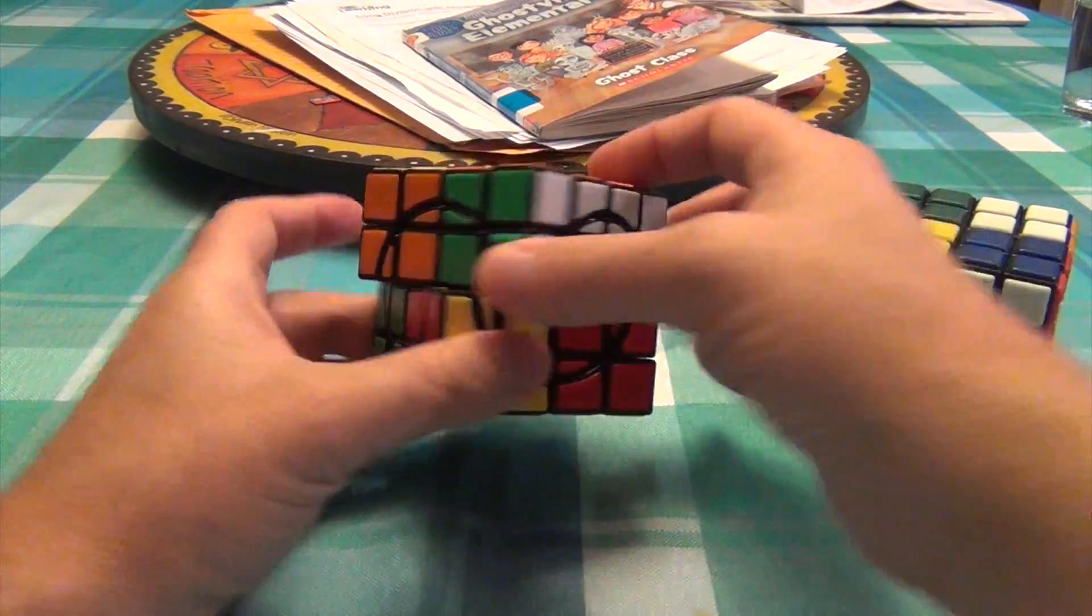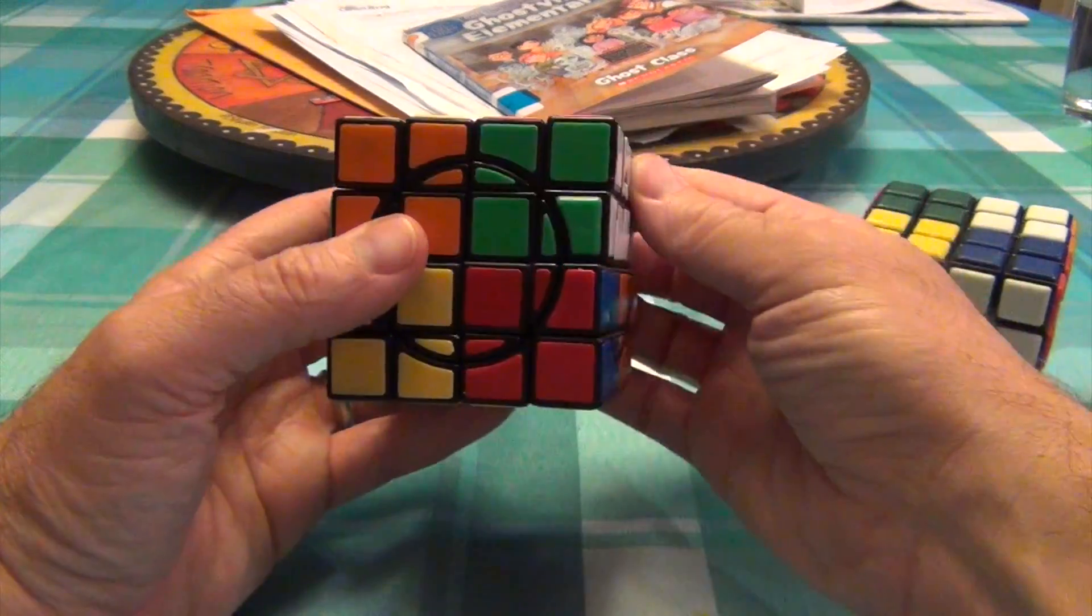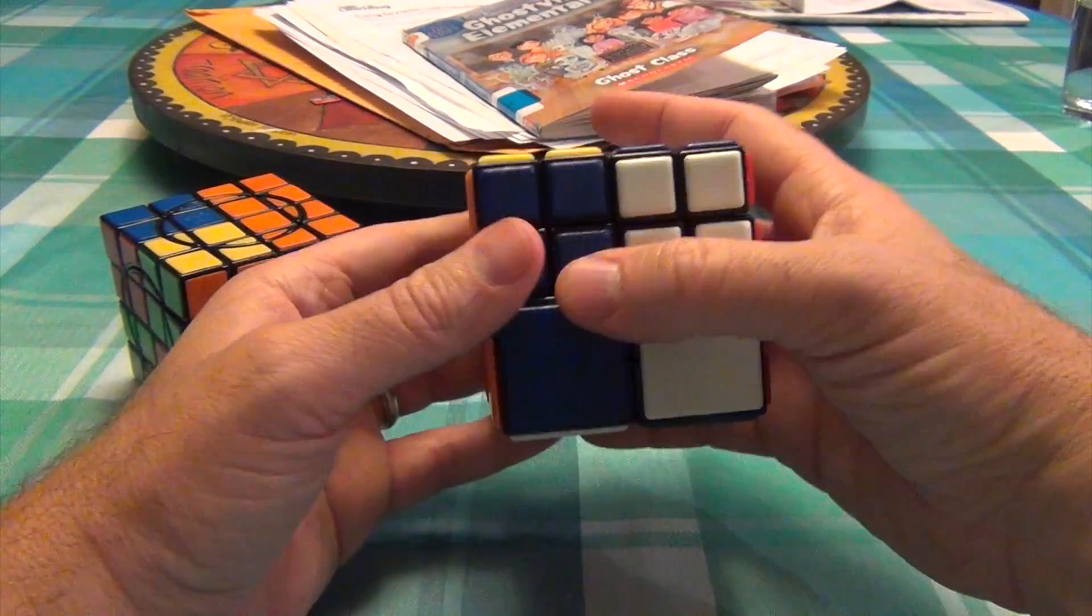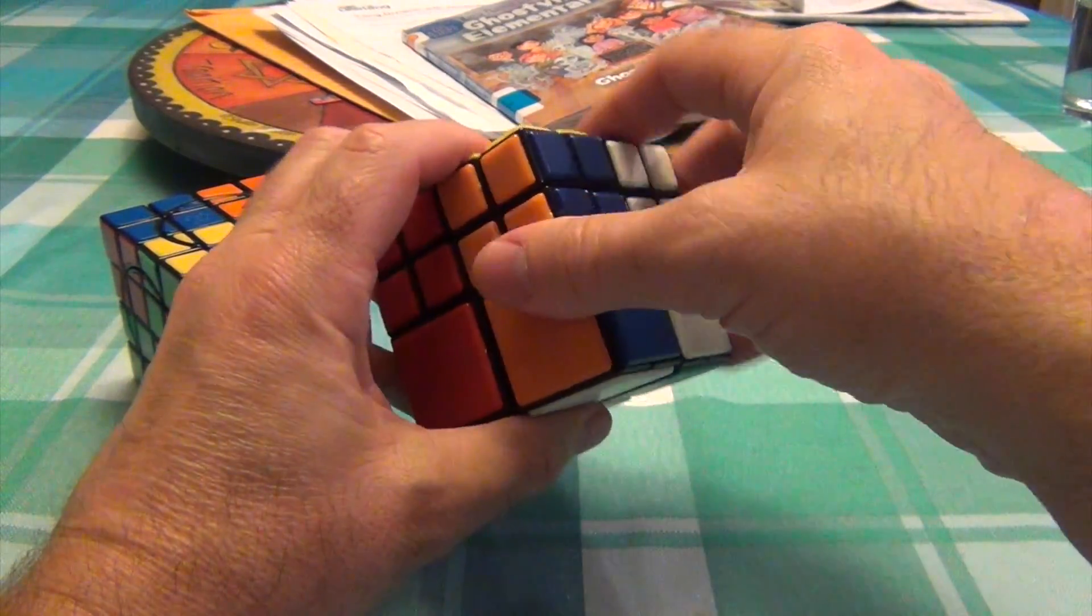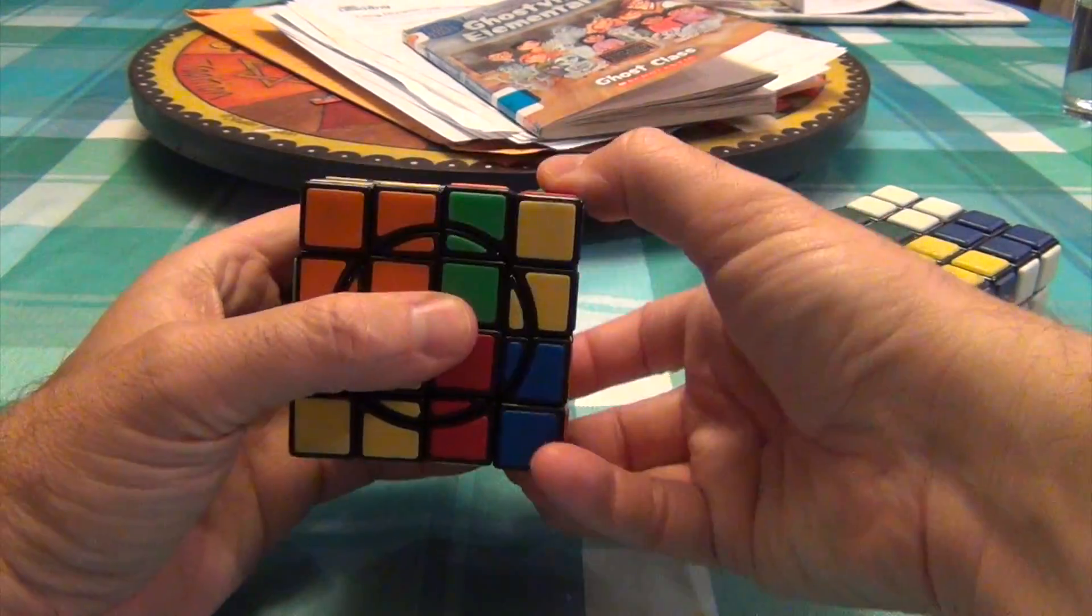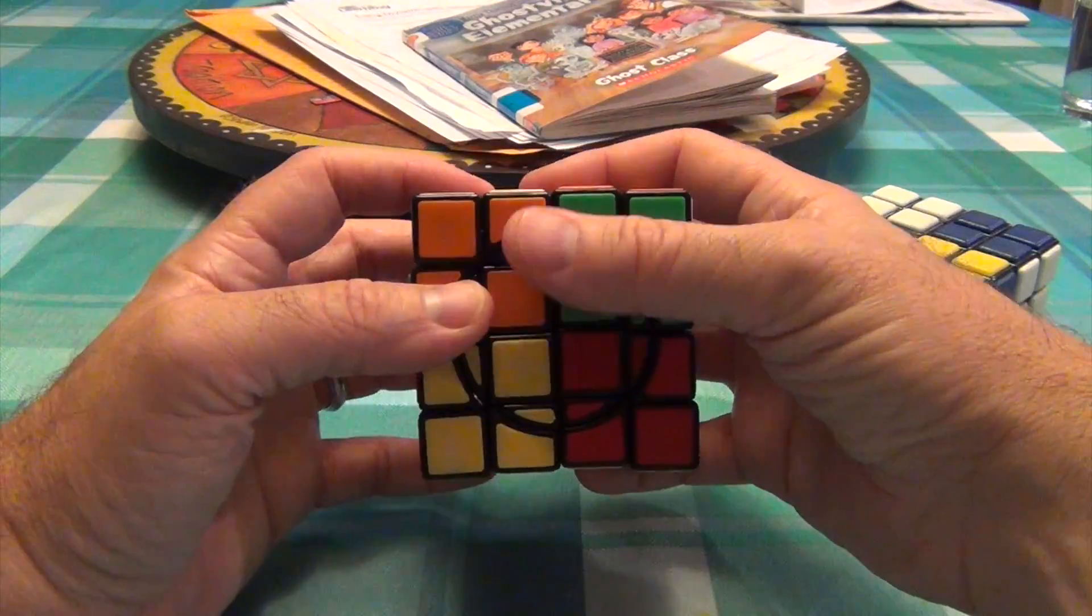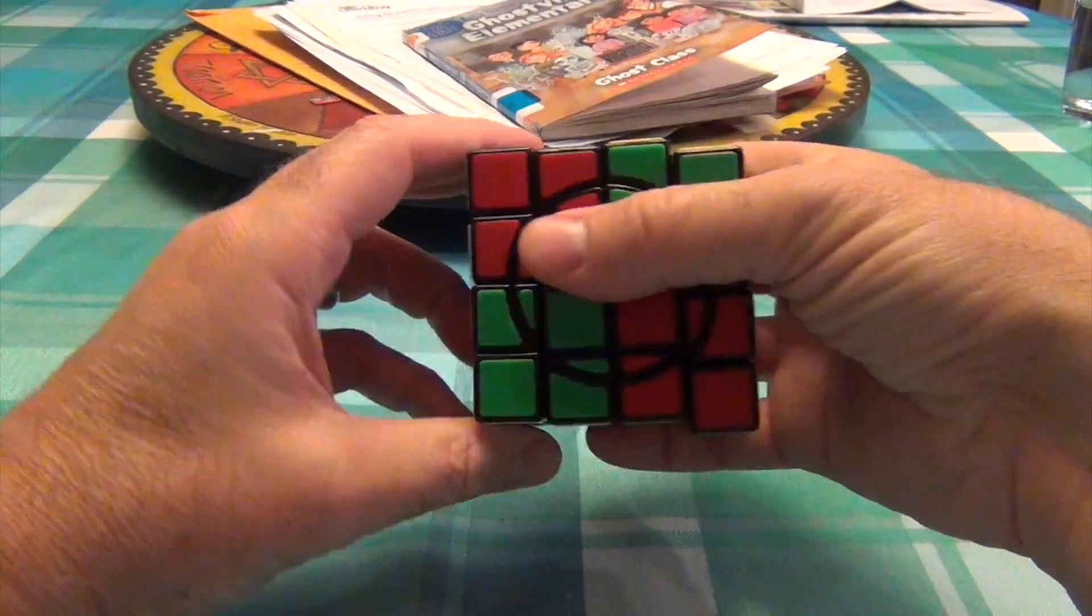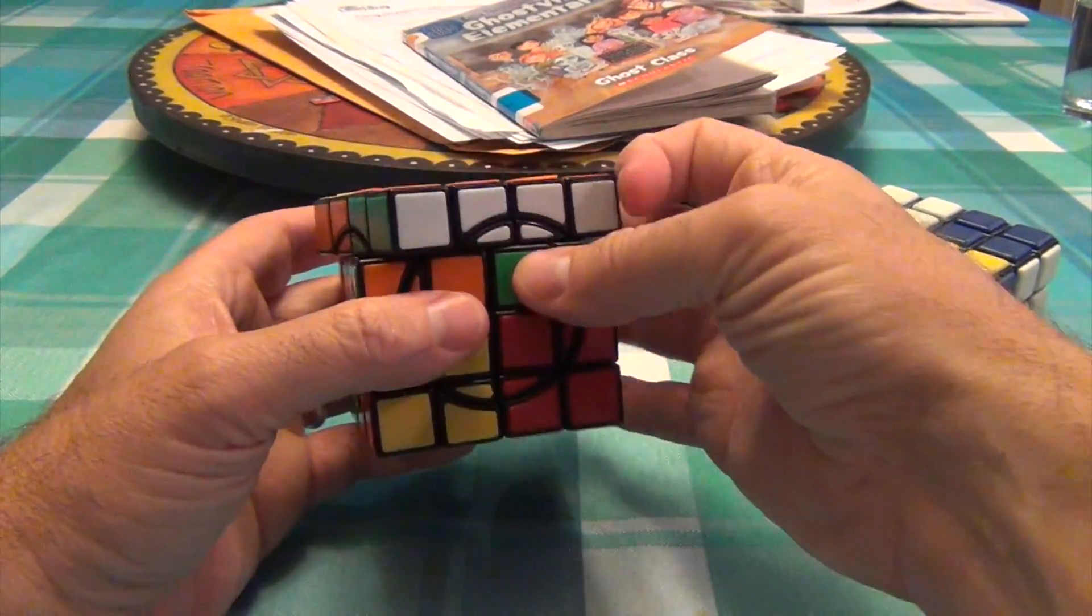So too, you can do middle slice here, middle slice here, and you can do an up slice. But there's no R moves, there's no L moves, there's no F moves, and there's no B moves. So, none of this, none of this, none of this, and none of this. But you can do a whole lot of this.